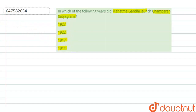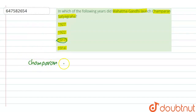Our right answer is 1917. In 1917, Gandhi Ji started the Champaran Satyagraha. Champaran is a place in Bihar State.